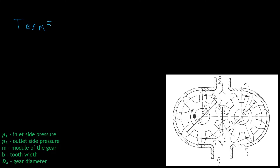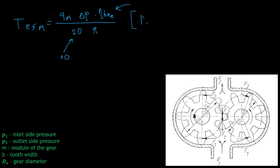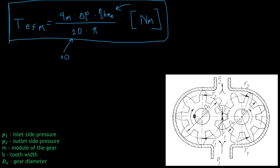The effective torque of the motor equals the specific flow of the motor times the achieved pressure difference times the hydromechanical efficiency factor for the motor, divided by 20 times pi. We added the hydromechanical efficiency factor to the theoretical torque equation and added 10 in the denominator because we want our units to be in newton meters. This is the effective torque equation for gear motors. When using it, put specific flow in centimeters cubed per rotation and the achieved pressure difference in bars.